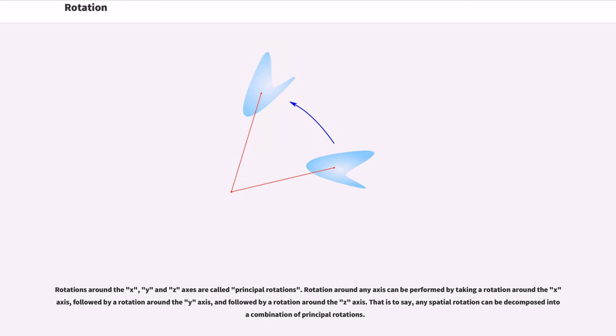Rotations around the X, Y and Z axes are called principal rotations. Rotation around any axis can be performed by taking a rotation around the X axis, followed by a rotation around the Y axis, and followed by a rotation around the Z axis. That is to say, any spatial rotation can be decomposed into a combination of principal rotations.